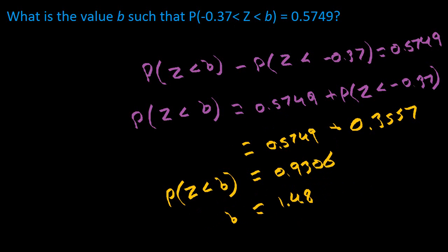Now we can actually confirm this, let me change colors, by if we actually take the probability of B occurring 0.9306 and subtract it by the probability of this occurring, this one being less than Z.